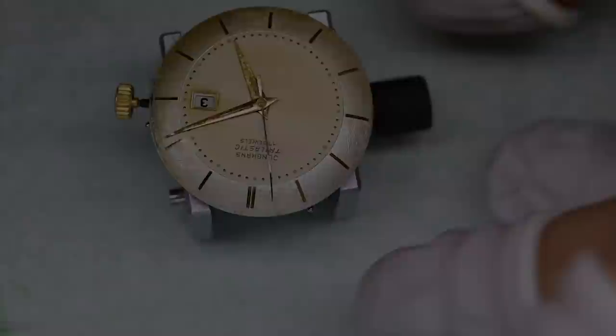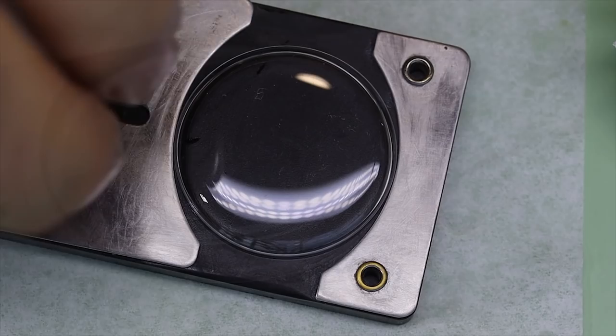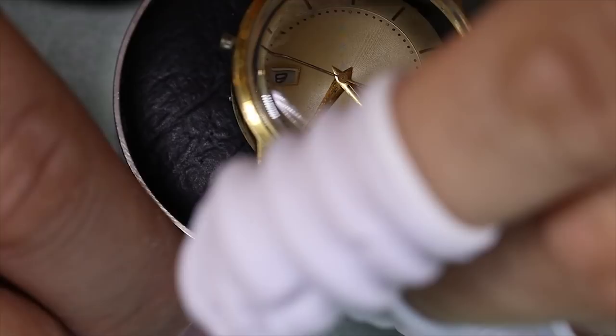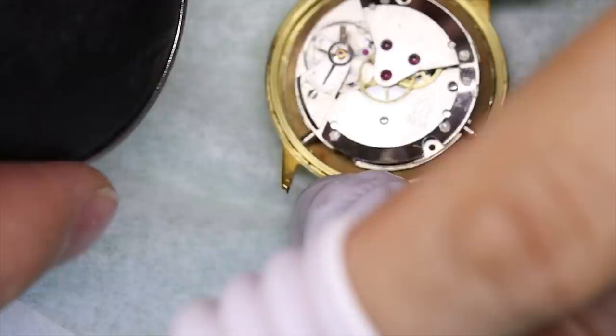All right, almost finished. Oh, one thing we almost forgot: the new crystal. I'm gonna use this crystal press for that. Also a pretty cheap tool that you can get. It doesn't have to be a Bergeon. It works pretty well on watches like this. I'm gonna make sure we blow off any dust that's on either the inside of the crystal or on the dial.